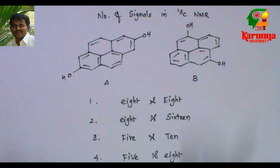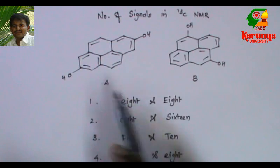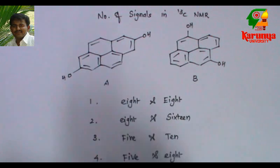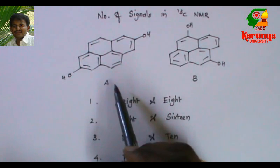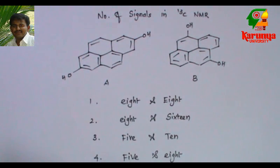Today I am going to solve a problem on C13 NMR. What will be the number of signals in C13 NMR for compounds A and B? The structure of A and B has been given. Both are polyaromatic hydrocarbons with phenolic groups. Very often such questions are asked in CSIR. How to predict the number of signals in the 13C NMR of these compounds?